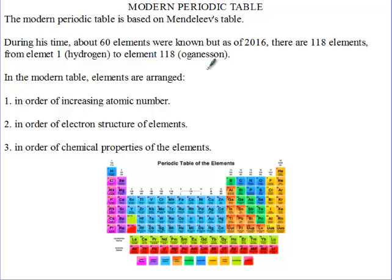Let's look at some differences between the modern periodic table and Mendeleev's periodic table. In the modern periodic table, elements are arranged in order of increasing atomic number. For Mendeleev, he arranged them in order of increasing relative atomic masses.